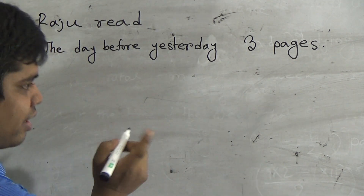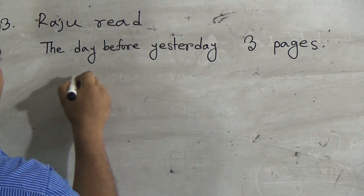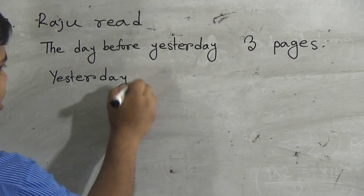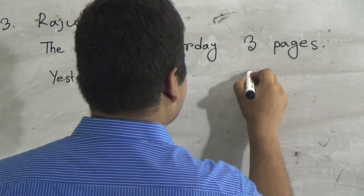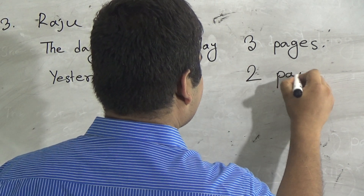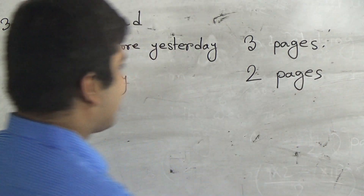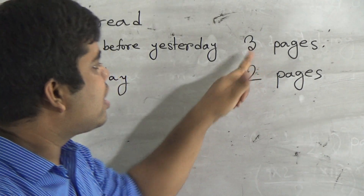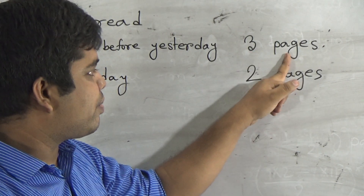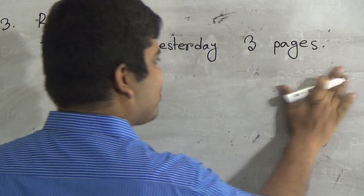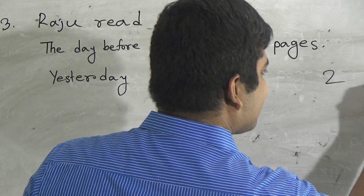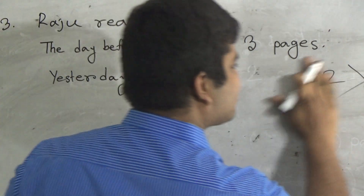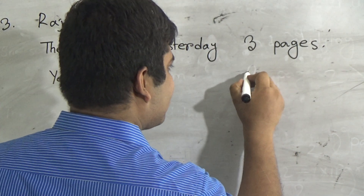Then, Saturday — he read two pages. Dear student, you must write these two pages under the three pages. If you write two pages elsewhere, then this math will be wrong. So you must write two pages directly under the three pages.